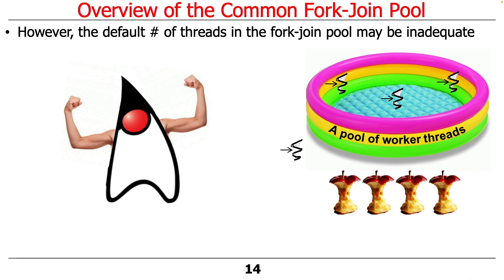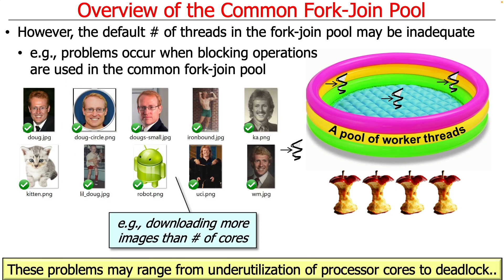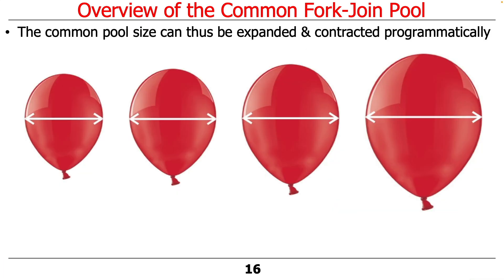However, there are circumstances where the default number of threads in the fork join pool may be inadequate. For example, if you've got four threads and ten images to download, you have many more images than cores. If you only had the number of cores in the pool, you'd end up with underutilization — after four threads block on I/O, there's nothing to do even though cores are available. You could also end up with deadlock in some circumstances. What we'd like is a way to expand the number of threads when blocking tasks are running, and then contract it when there's less work — not using resources unnecessarily.